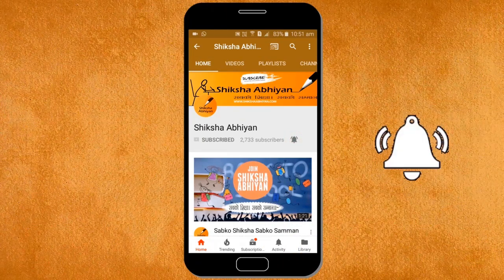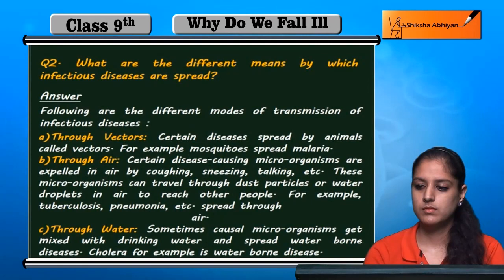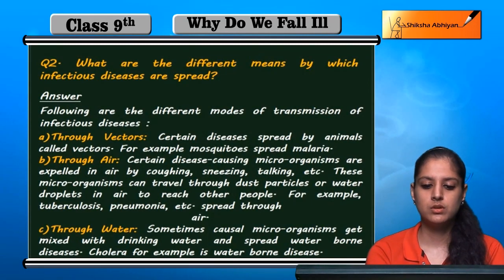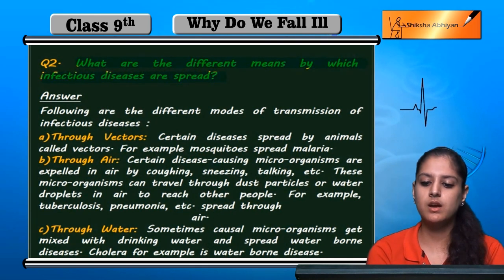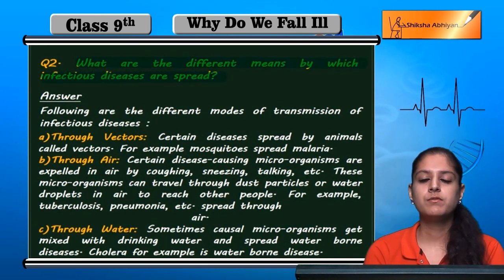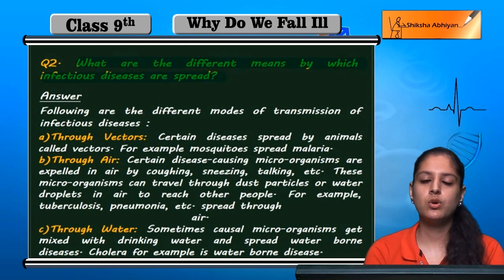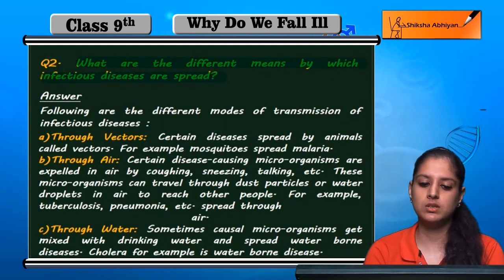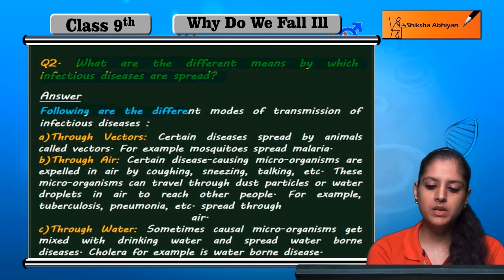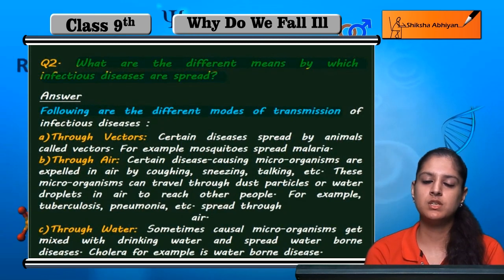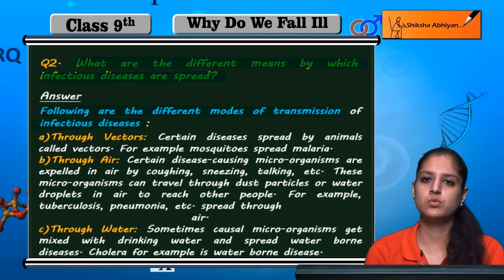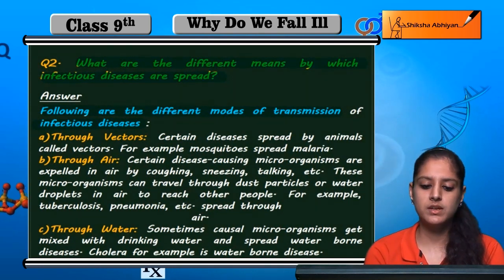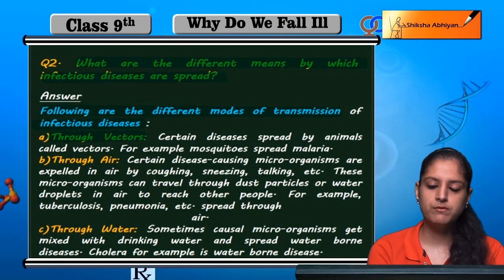Question 2: What are the different means by which infectious diseases are spread? Infectious diseases can spread in different ways. The following are the different modes of transmission by which infectious diseases can transmit from one place to another. The first is through vectors.